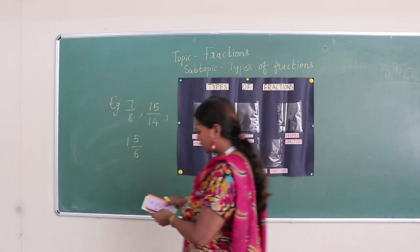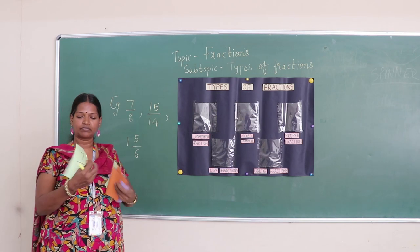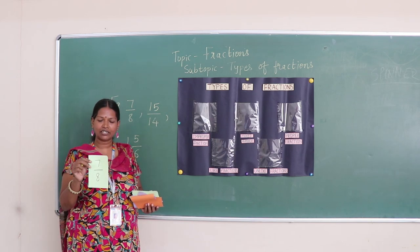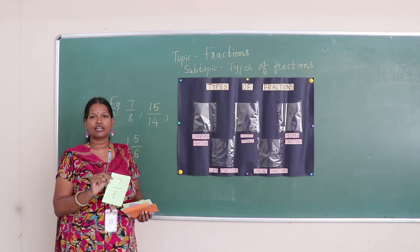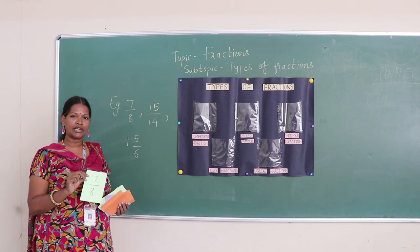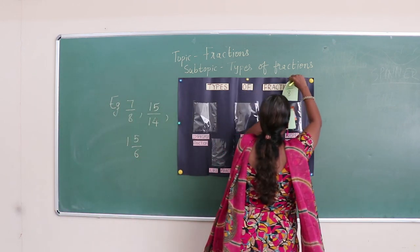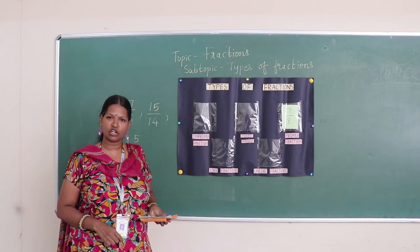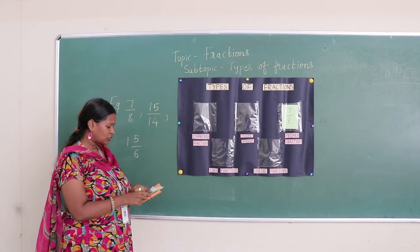For the first example, we have 7 upon 8. We already know that 7 is the numerator and 8 is the denominator. In this fraction, the numerator is a smaller number than the denominator. These fractions are called proper fractions, where the denominator is bigger than the numerator. So I am going to put this in the pocket of proper fractions. The value of this fraction is less than 1.